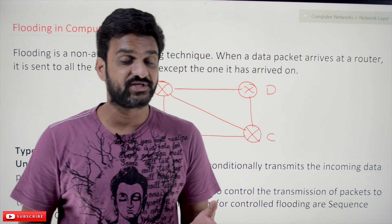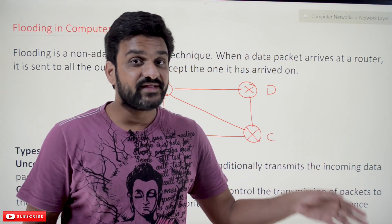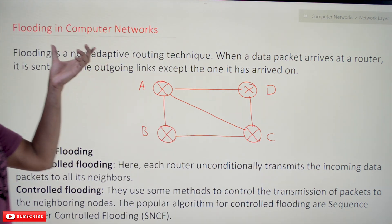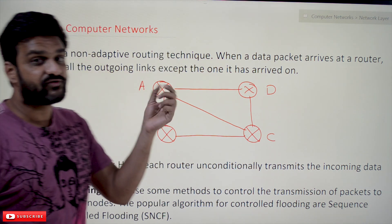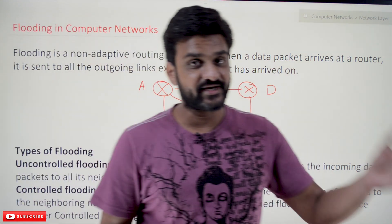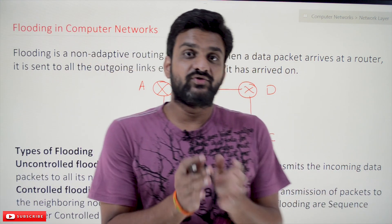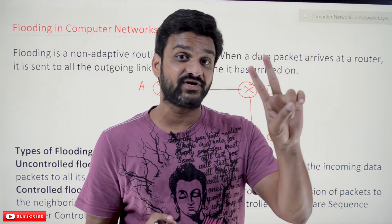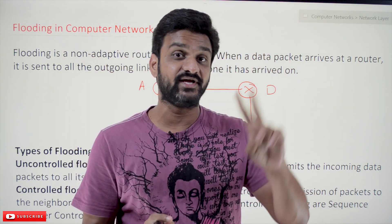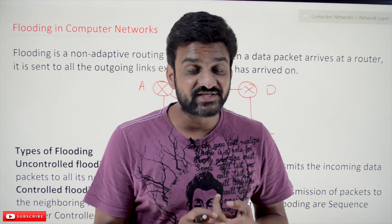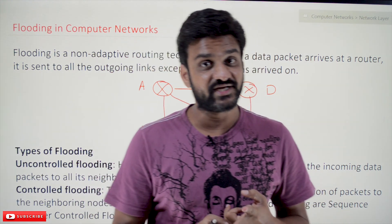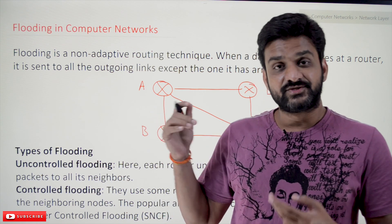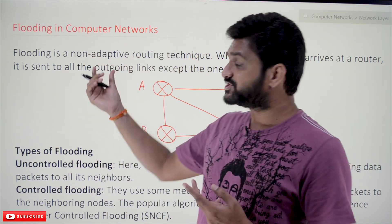The link for the playlist is provided in the description below. Now coming to this class, flooding is another kind of routing technique. We have discussed that there are two different types of routing in dynamic routing: one is distance vector routing and the other one is link state.